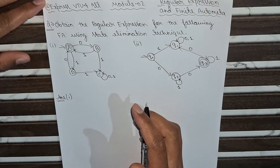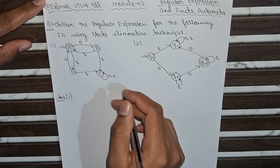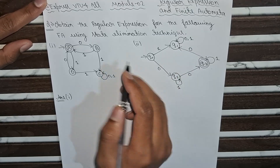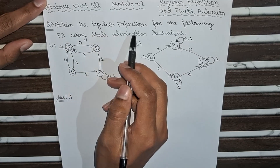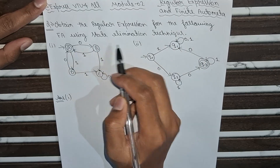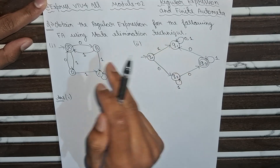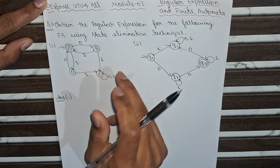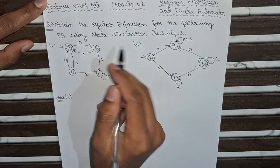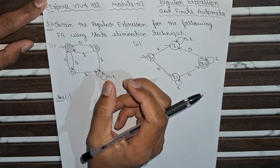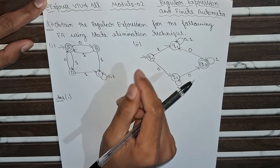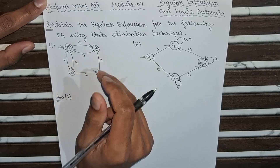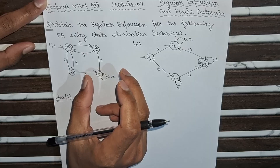Hello everyone, welcome back to Express Video for All. Today we are going to solve a very important question from Module 2: Regular Expression and Finite Automata. In this question we have to obtain the regular expression for the following finite automata using the state elimination technique. In state elimination technique, we leave the initial state and we leave the final state, and we eliminate the intermediate states.